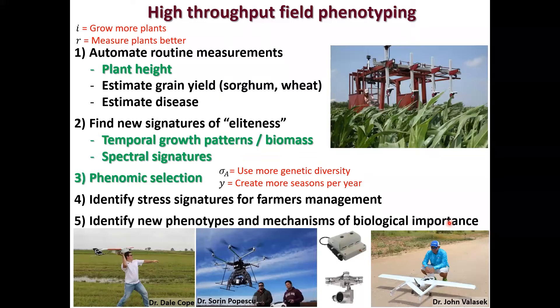Maybe we can do that with drones or field vehicles. In other crops like sorghum and wheat, where the panicle is out, people are using it to estimate grain yield. We've also started using it to estimate disease pretty accurately. But to me, that's not really very exciting — that's using the old QTL model. What's more exciting is doing something new and finding new signatures of eliteness, such as temporal growth patterns, biomass, or spectral signatures.